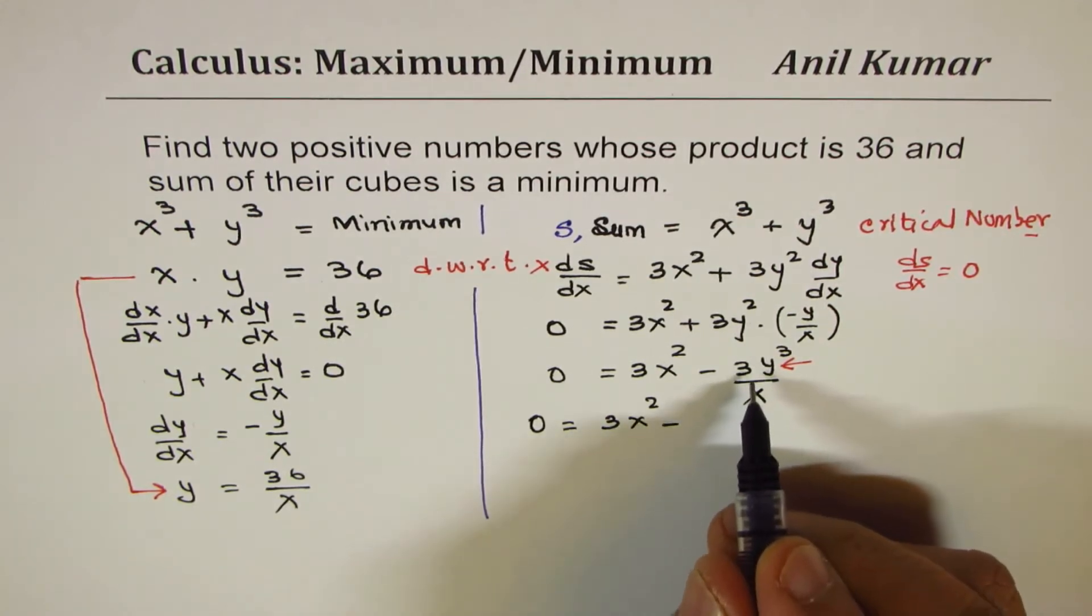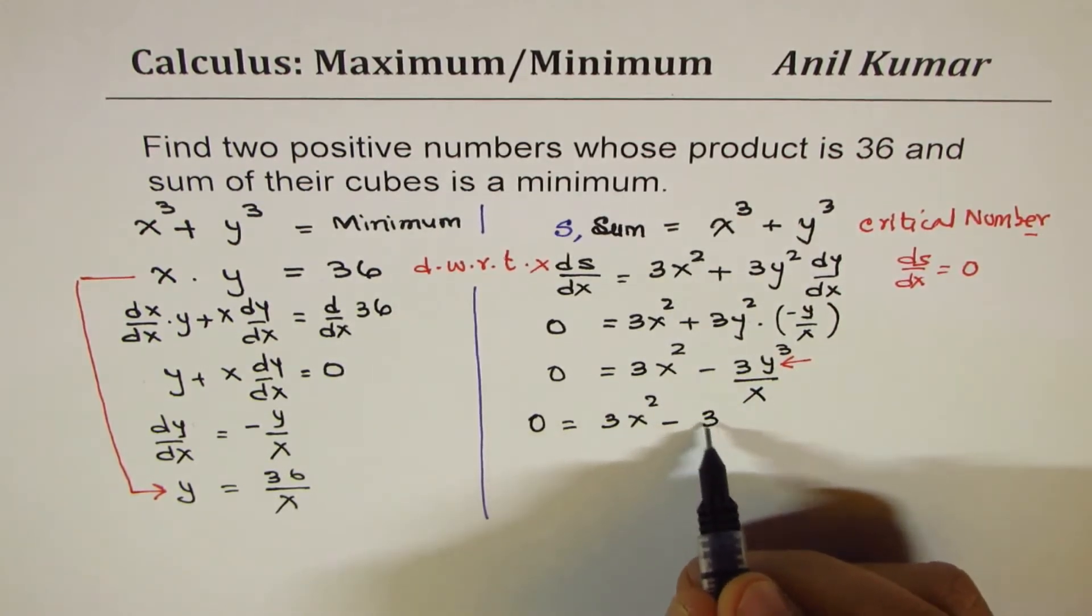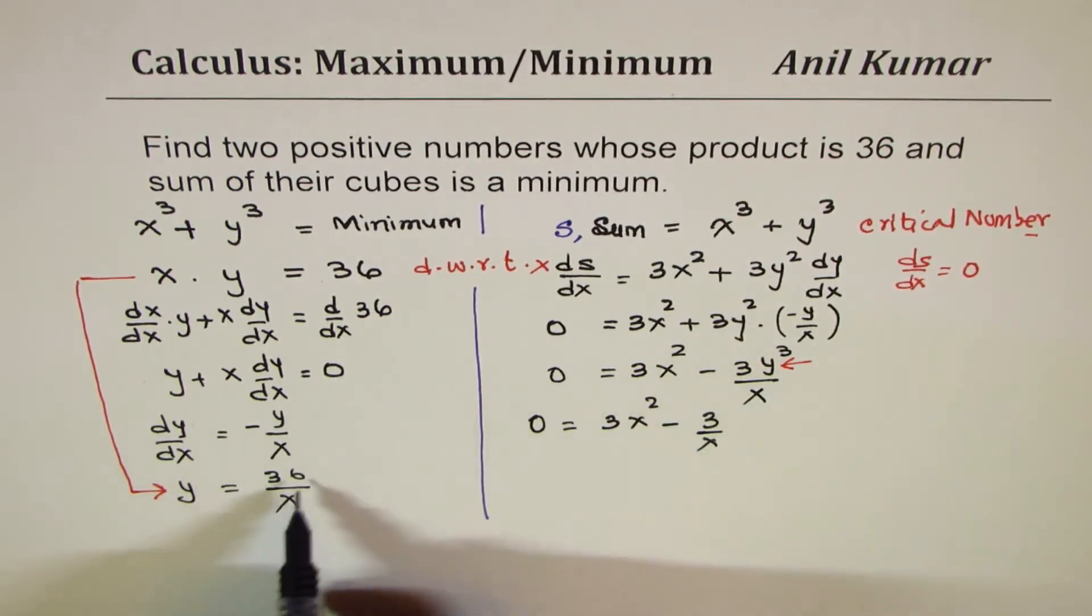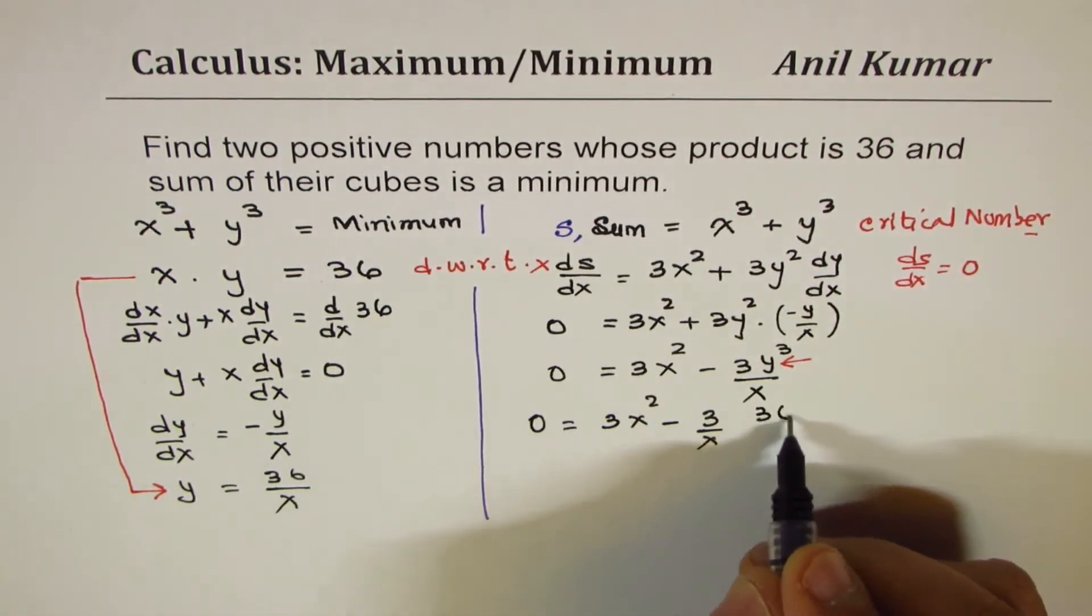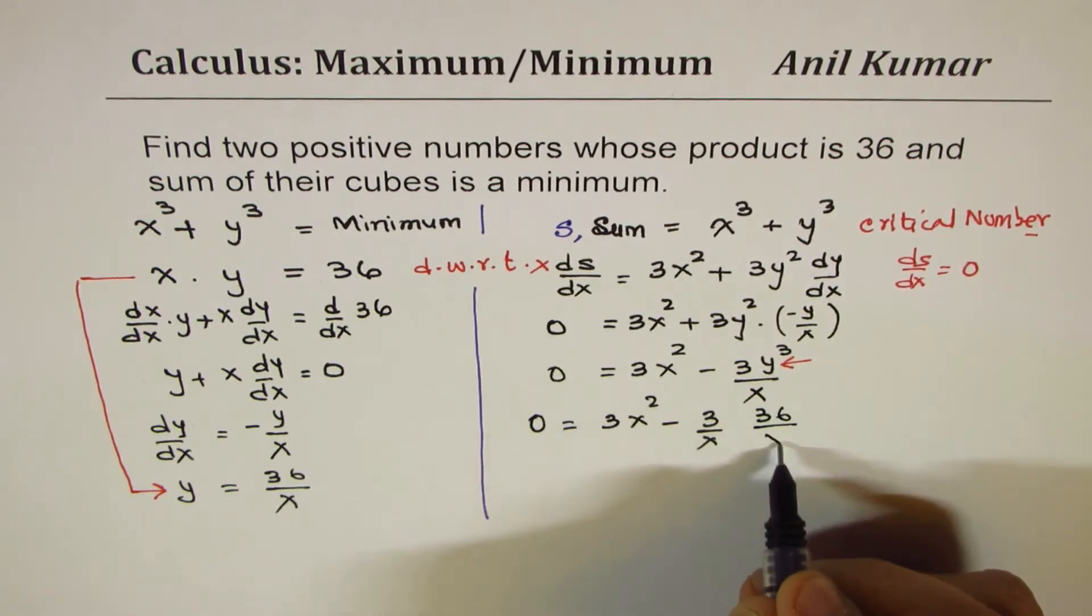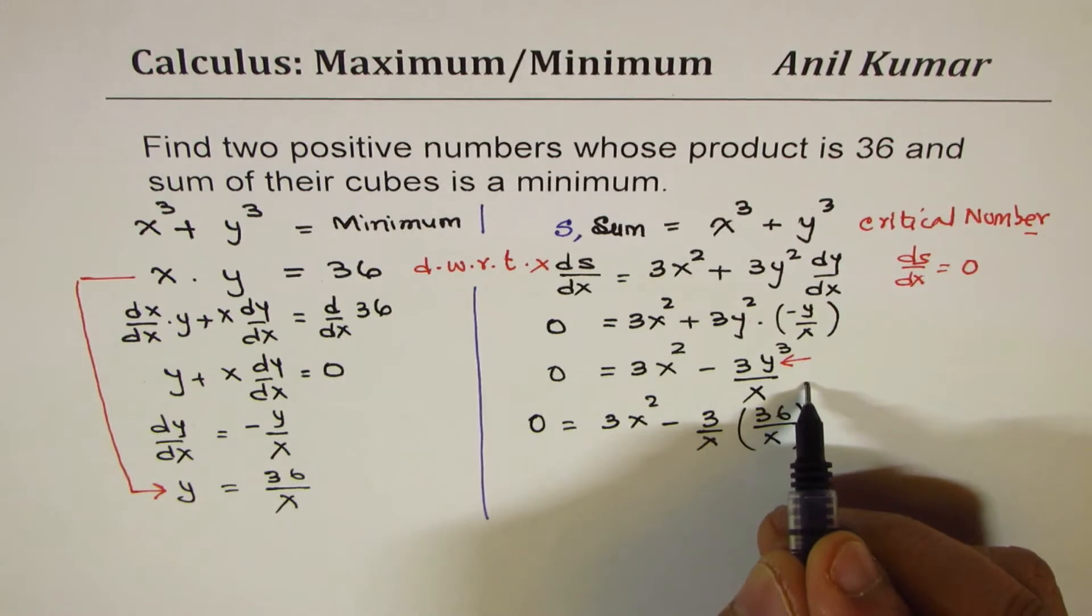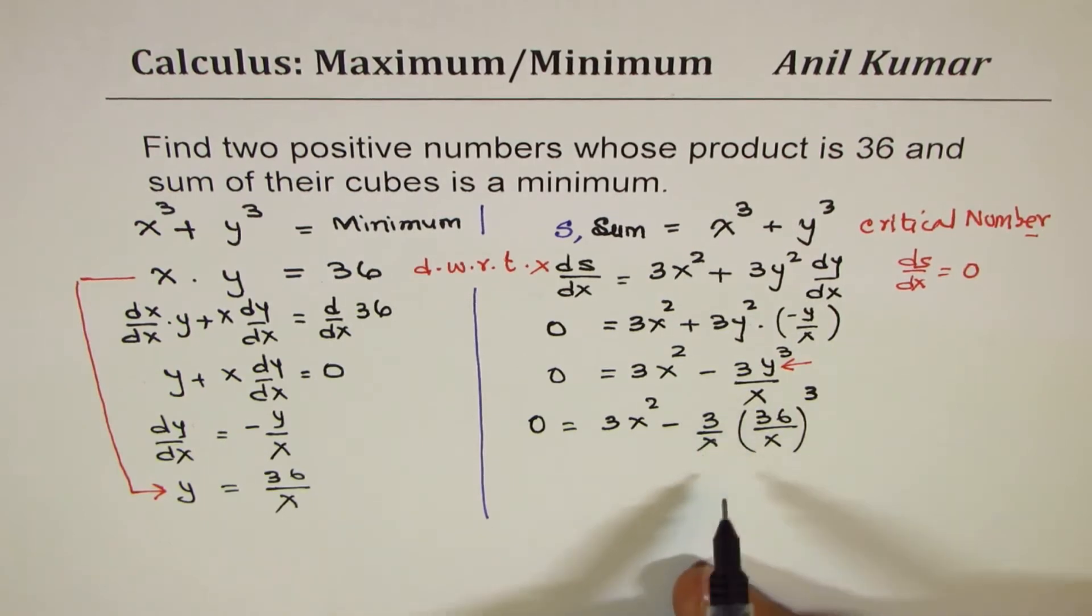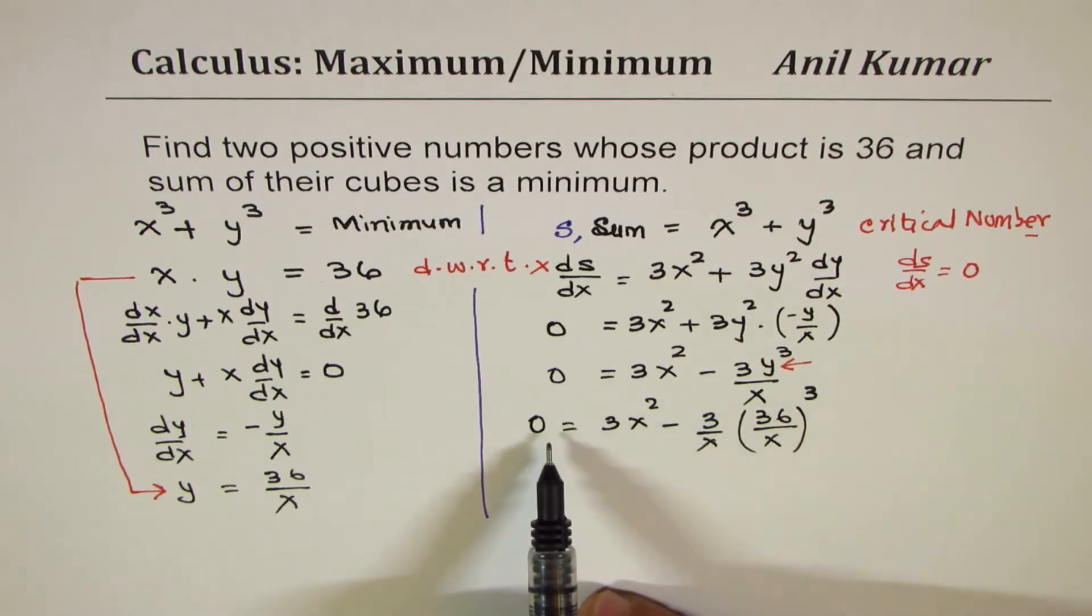We'll change y, so we have 3 here, 3/x, let me write like this: x and y³ is (36/x)³. That is y³, right? 36/x whole cube. So we get that expression here. So 3/x times (36/x)³.